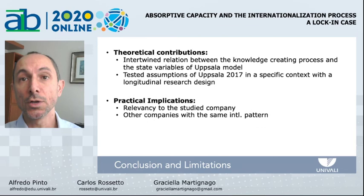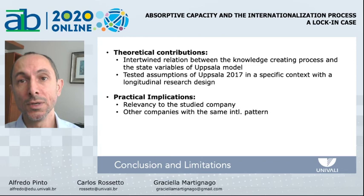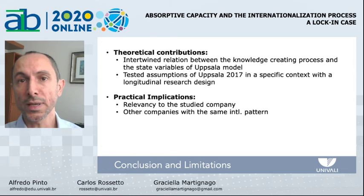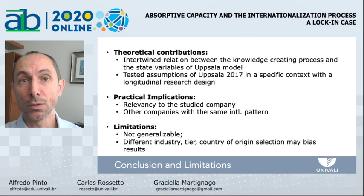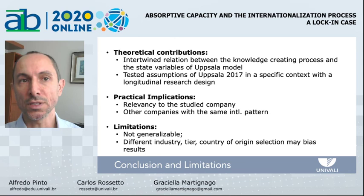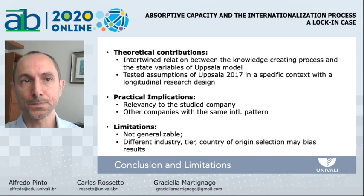The practical implications of our study refer especially to the company studied, which was not aware of such locking states and is now in a better position to evaluate and redirect its international trajectory. This contribution is possibly applicable to numerous companies around the globe in a similar situation. Our findings are based on evidence from a single case study; therefore, the proposed relations are not generalizable. Furthermore, the selection of a case of an emerging market multinational enterprise strategically positioned in the second tier of the automotive global value chain directly influences the results, and different results may emerge from diverse contexts.